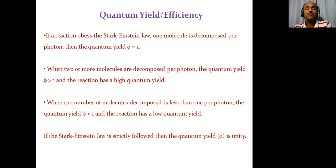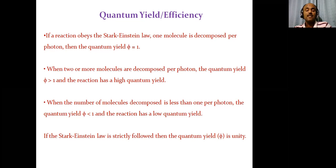If a reaction obeys the Stark-Einstein law, one molecule is decomposed per photon, and therefore quantum yield φ equals one. When two or more molecules are decomposed per photon, φ is greater than one and the reaction has high quantum yield. When fewer than one molecule is decomposed per photon, φ is less than one and the reaction has low quantum yield. Therefore, if the Stark-Einstein law is strictly obeyed, the quantum yield φ must equal one.